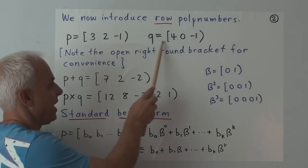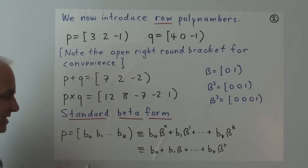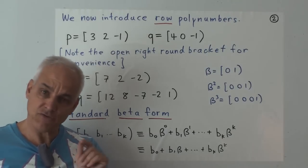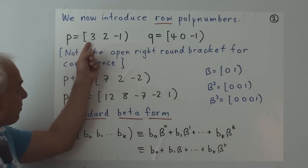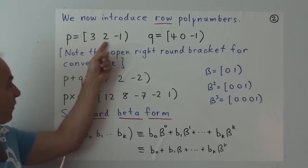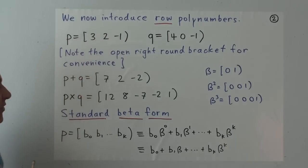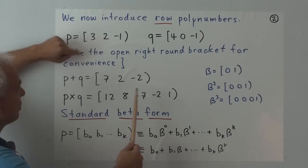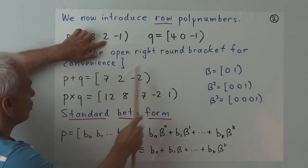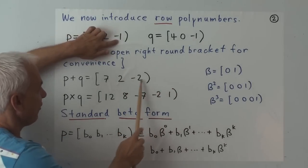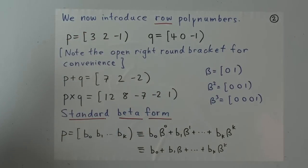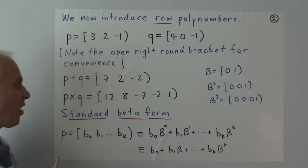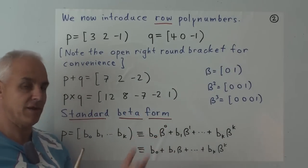How are we going to add and multiply two such things? It's exactly the same as with column polynumbers, except everything is along rows. Remember, we're starting from the left, so the leftmost entry is the zeroth coefficient. The sum of the two polynumbers is just coefficient by coefficient: 3 plus 4 is 7, 2 plus 0 is 2, minus 1 plus minus 1 is minus 2. The product is the same as what we do with column polynumbers, except we write it along a row.